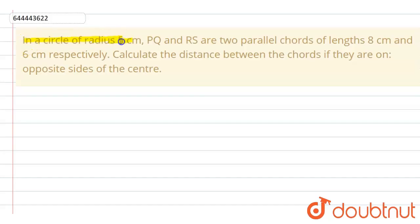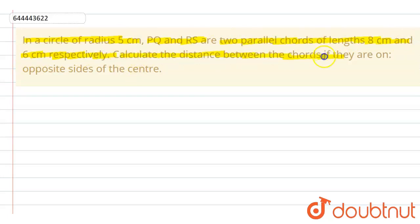Hello students. The question is: in a circle of radius 5 centimeters, PQ and RS are two parallel chords of length 8 centimeters and 6 centimeters respectively. Calculate the distance between the chords if they are on opposite sides of the center. Here we have a circle.